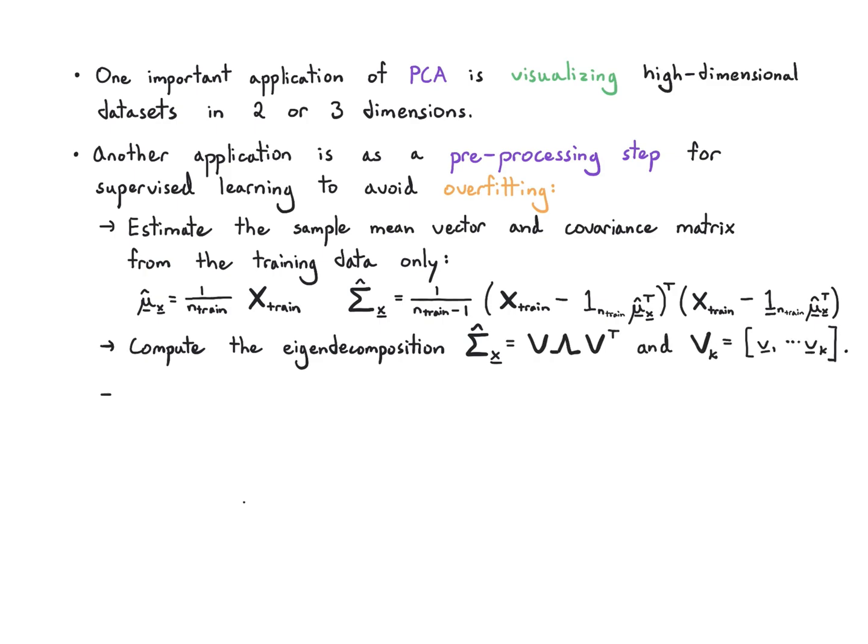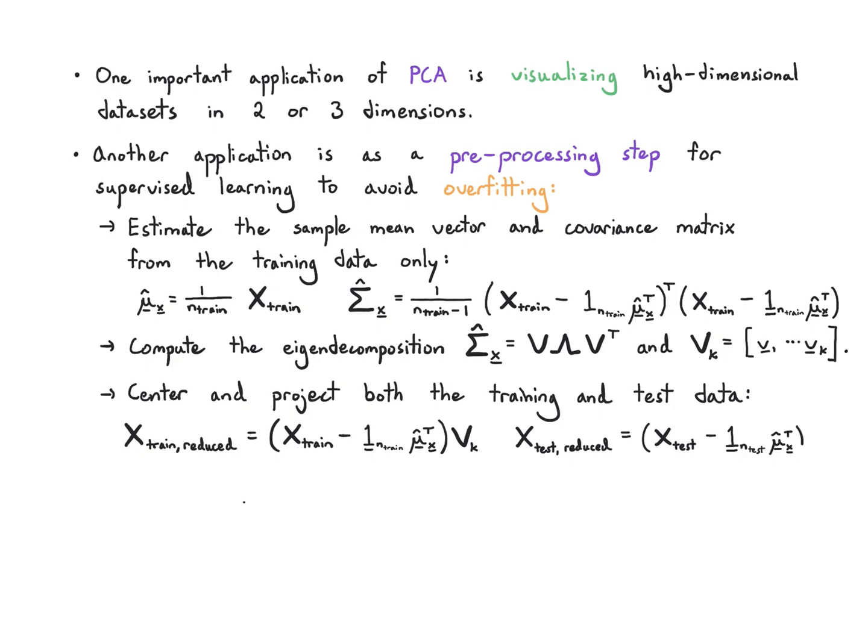Then I'm going to center and project both the training and test data down to k dimensions. I'm going to have the reduced training data which I get by subtracting the mean which I calculated from the training data and projecting by vk, again from the training data. Do the same to the test data, and I remind myself that this mean vector and projection matrix V came only from the training data.